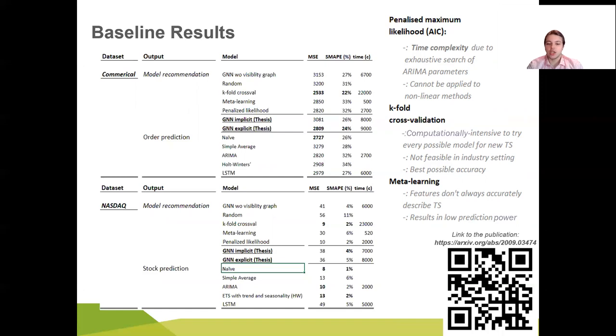For the stock data, GNN model has not shown noticeable improvements compared to the baseline approach and the LSTM embeddings actually do not seem to be ideal for the dataset. But still, SMAPE for stock data for GNN is on par with other methods. And regarding the commercial dataset GNN has performed similarly to the best model. For the stock market, GNN has shown mediocre results in the model recommendation. The penalized likelihood approach greatly surpassed GNN. The meta-learning has also performed better.